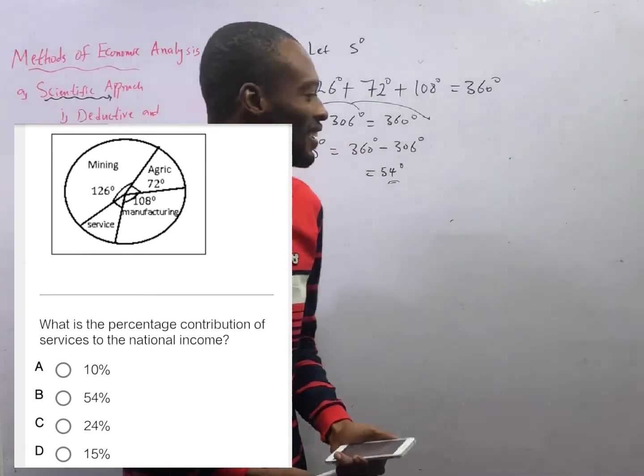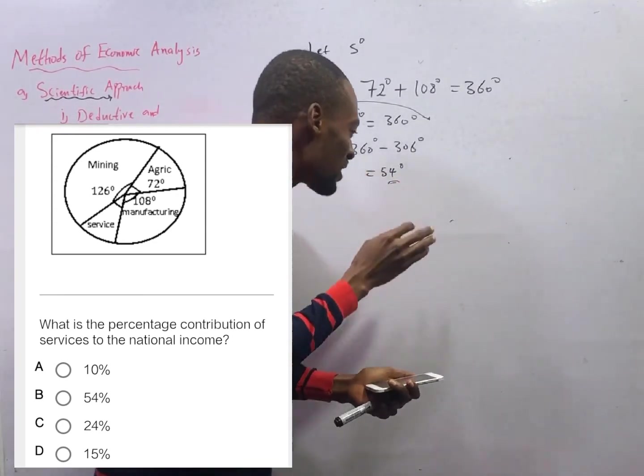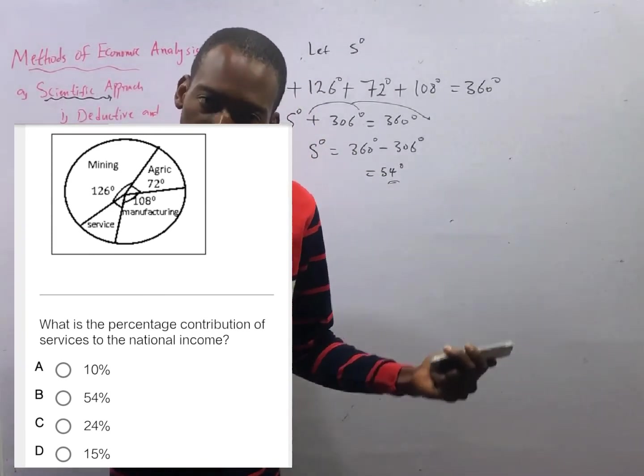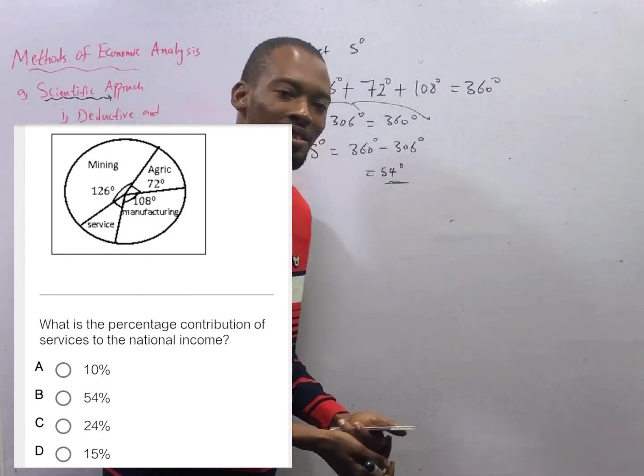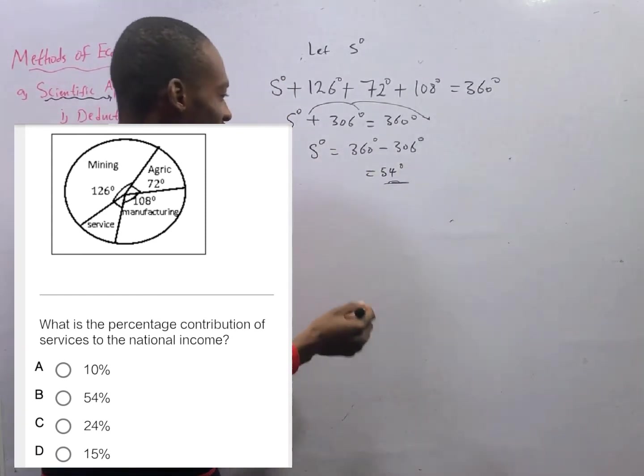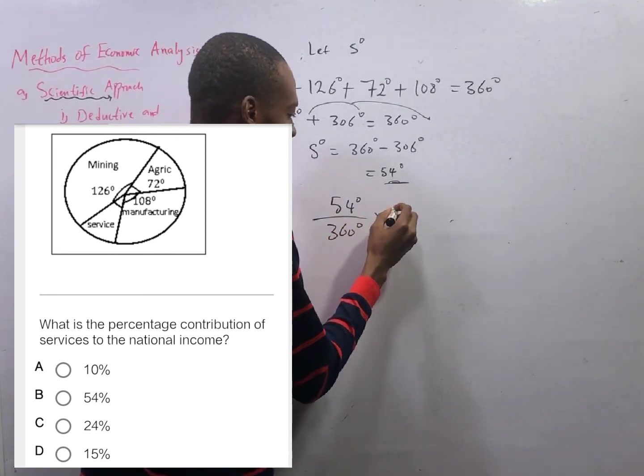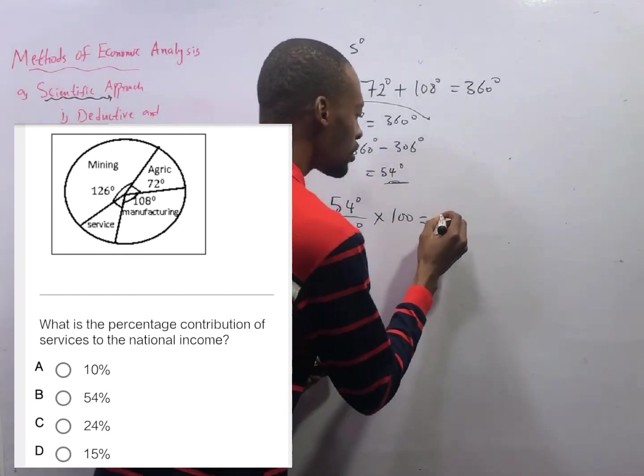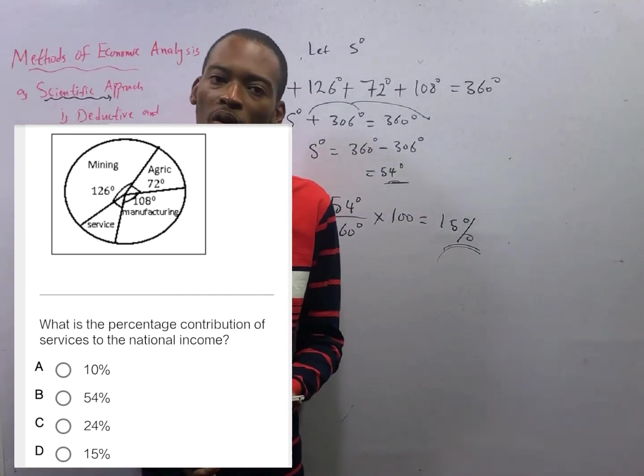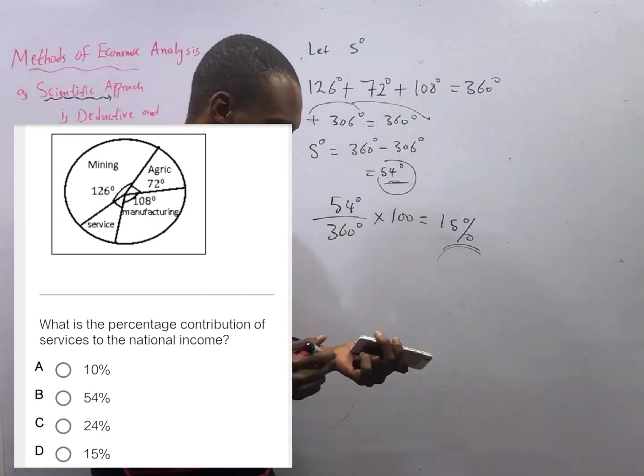Now when you get 54 degrees, you just look at the option and see 54 percent. Many of you will jump, 'we got it, correct!' You've not got it. This is degrees, not percent. Degree is different from percentage. Nobody asked you for degree, we need the degrees to get the percentage. To change degrees to percent, we say 54 degrees over 360 degrees times 100, and this should give you 15 percent.